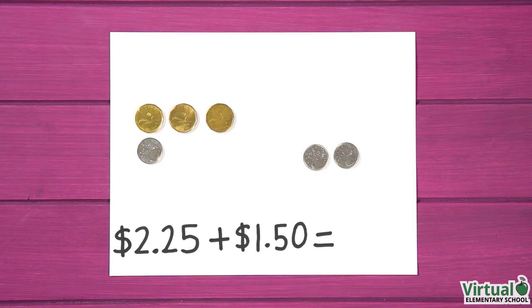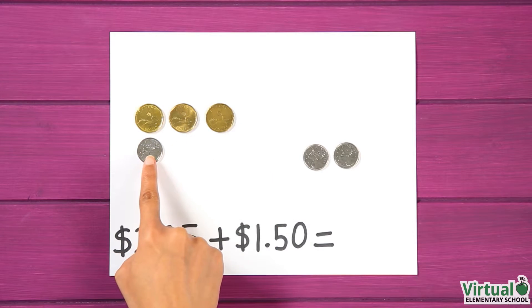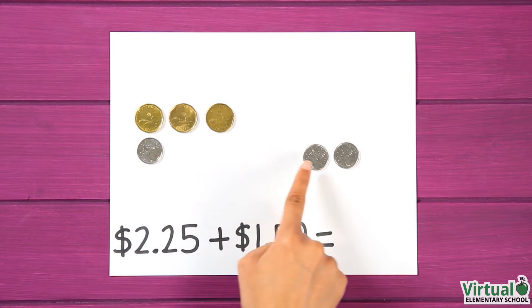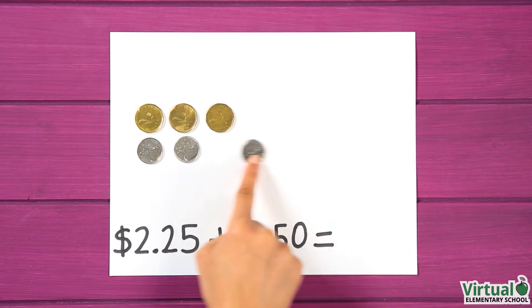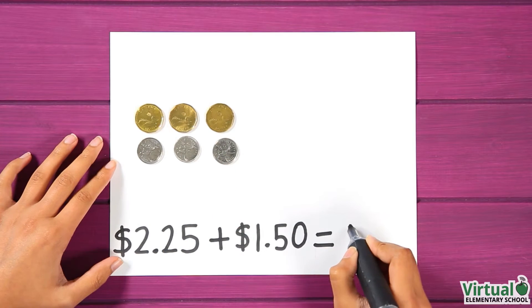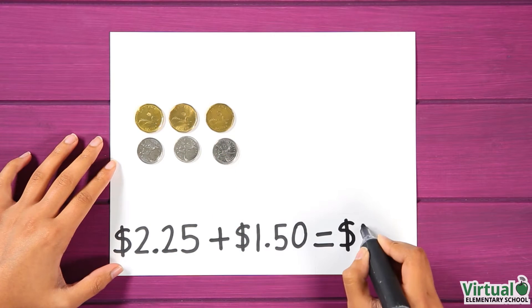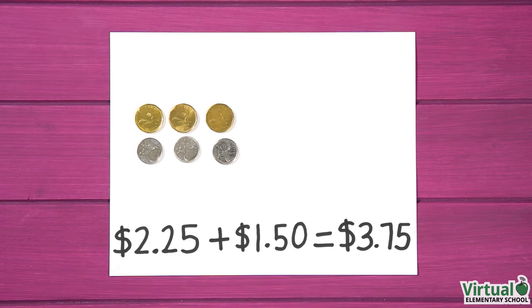Now let's count the quarters. Three dollars and twenty-five, fifty, seventy-five cents. I have three dollars and seventy-five cents.